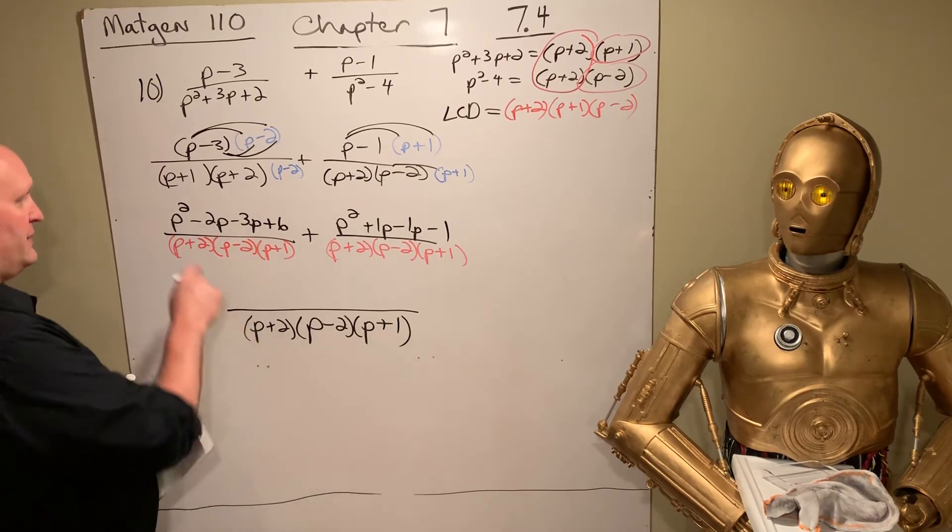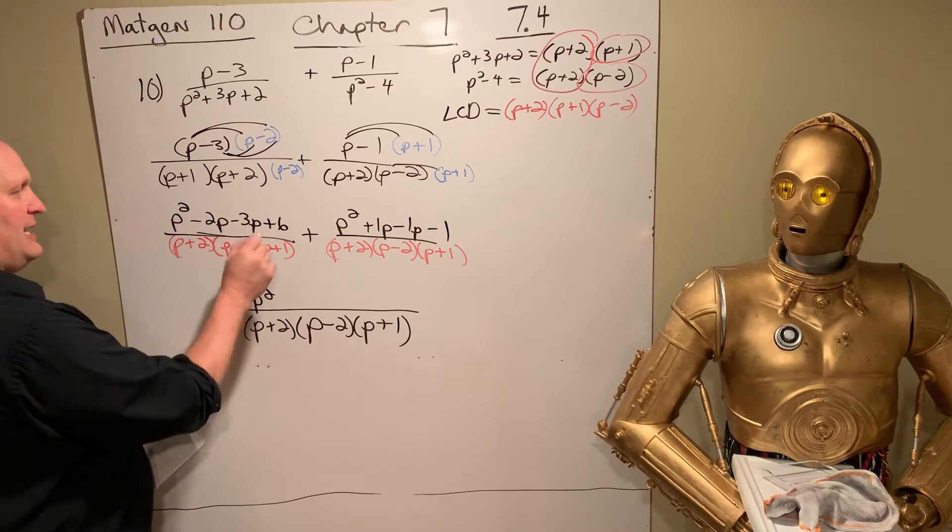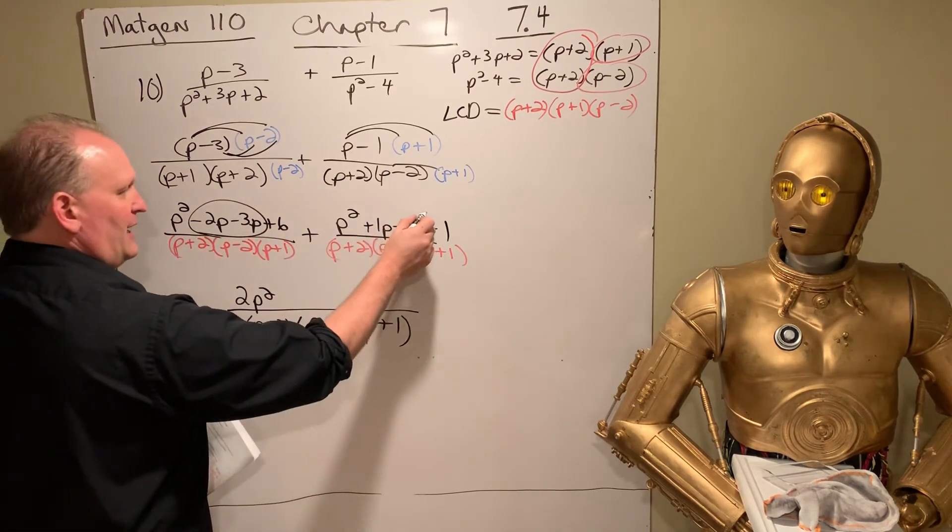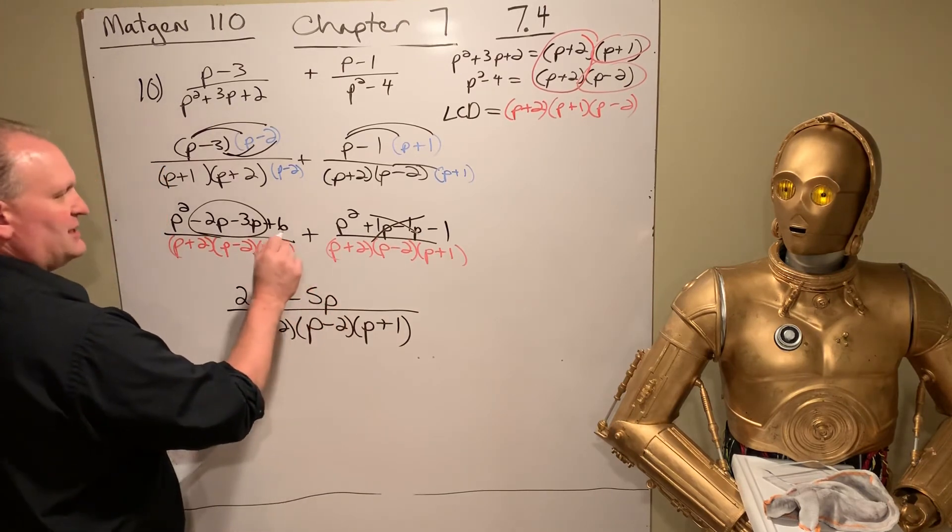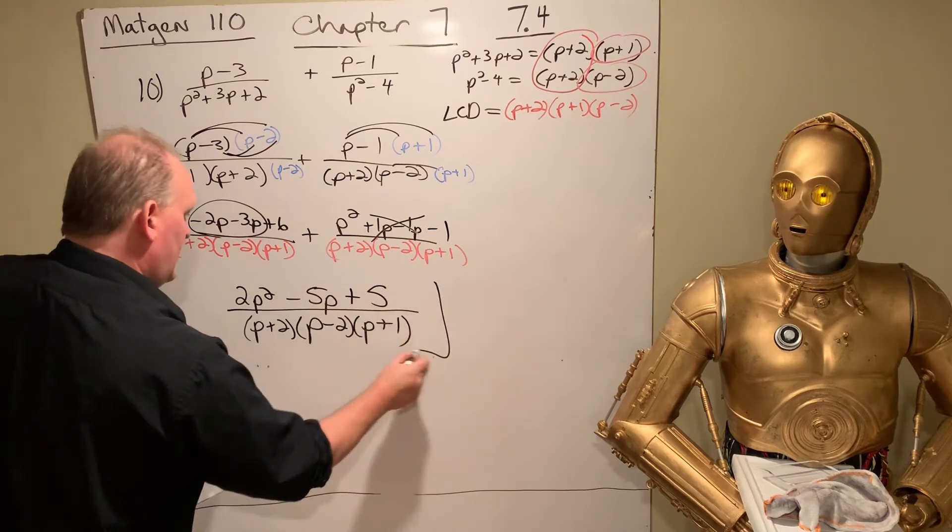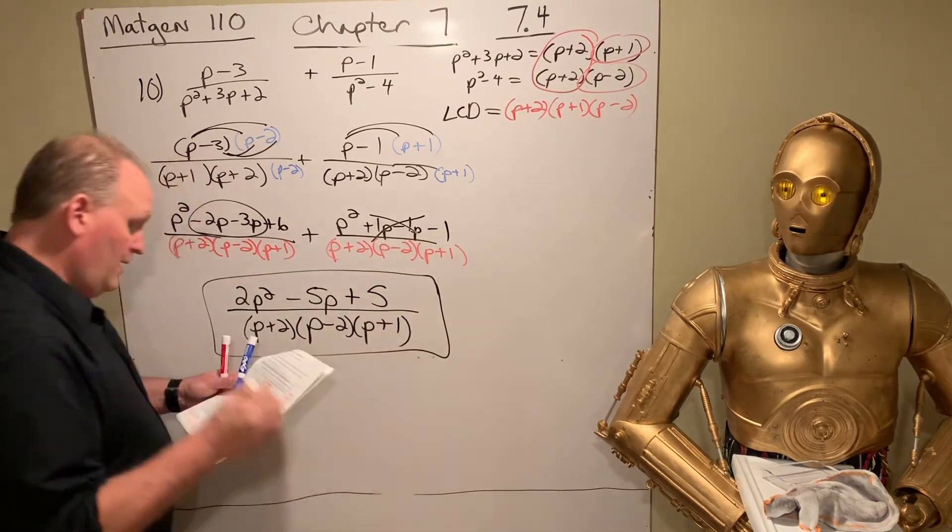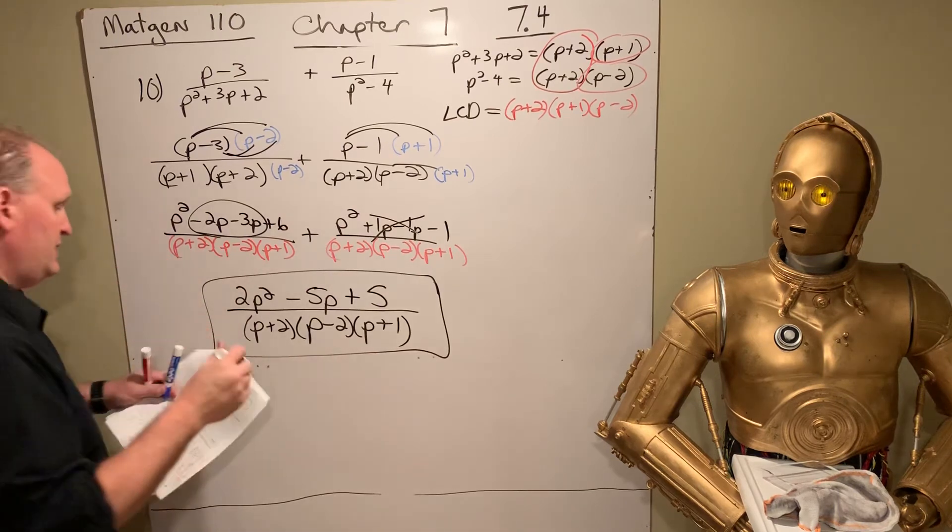But then in the numerator, we got P squared plus P squared. That's 2P squared. We got negative 5, and all that actually cancels off. So we got a negative 5P, and we got a plus 6 and a minus 1. That's a plus 5. And that is it. Not that that wasn't enough, but that's pretty tough.